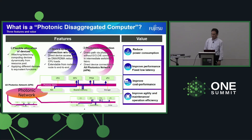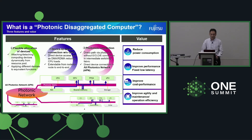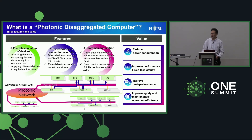For those requirements, we are proposing the Photonic Disaggregated Computing concept with three features. First, flexible allocation of devices — if the GPU is idle, the node should remove the GPUs from the system, and if the GPU is at very high load, a new GPU should be added. Second, device-to-device communication with connection without CPU, just like DMA or RDMA.